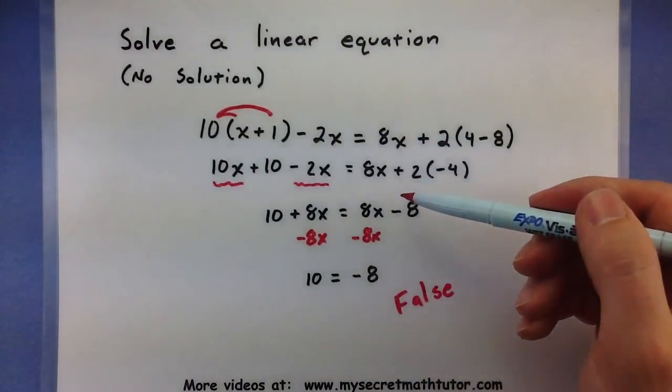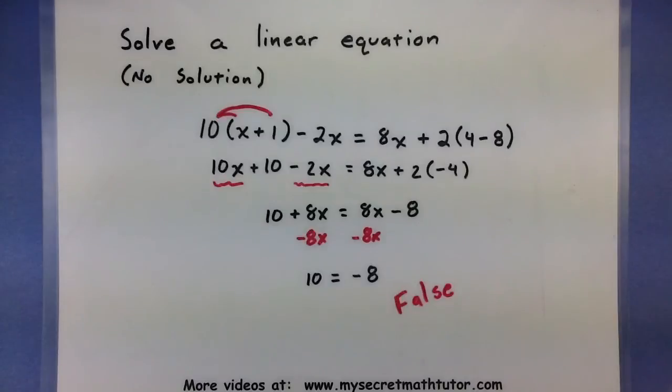And if I double-check the steps that I've gone through, I haven't made any mistakes. So in cases where you drop out the variables entirely and you're left with a false statement, this is your clue that you have no solutions to the linear equation.